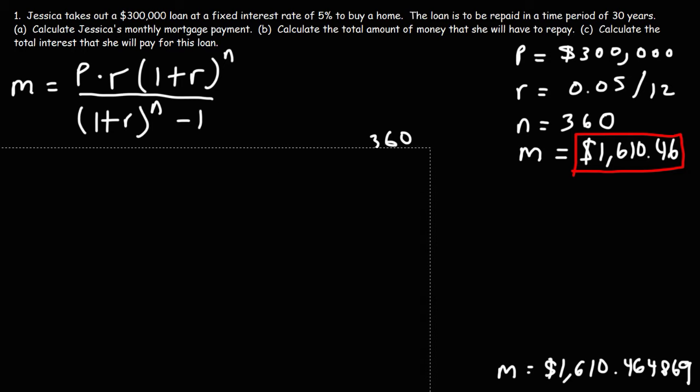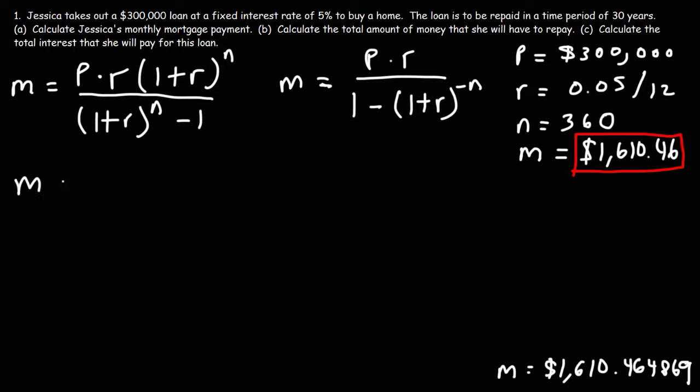Now, it turns out that there is another formula that you could use to get the same answer. And this formula is a little less, I mean, it's a little more simpler than the first one. So it's P times R divided by 1 minus 1 plus R, but raised to the negative N instead of positive N. Let's try that formula, too.